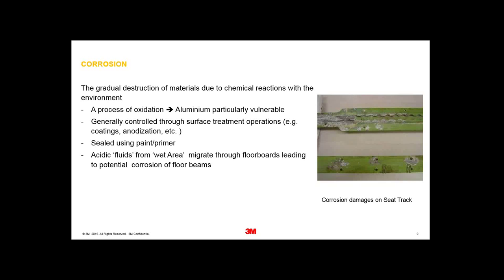In terms of corrosion on the inside of aircraft, we get acidic fluids from wet areas — the galleys and the toilets. Things like coffee, tea, and urine do migrate through the floorboards. Given that these are particularly acidic materials, they react with the floor beams below. Ultimately, if there's a scribe line in the paint finish, it can corrode the floor beams, which is a huge servicing cost — it takes an extra two weeks to replace all the floor beams at a C-check.